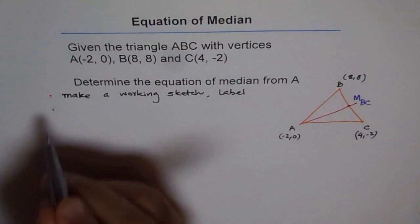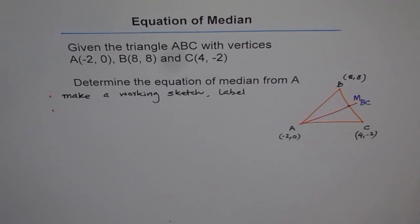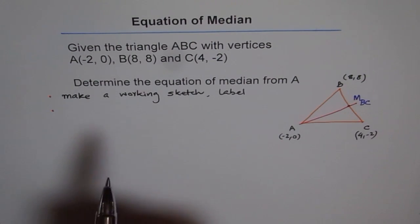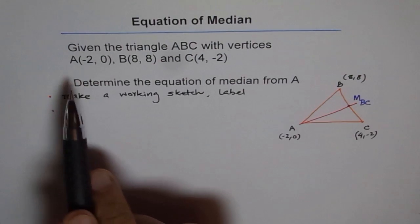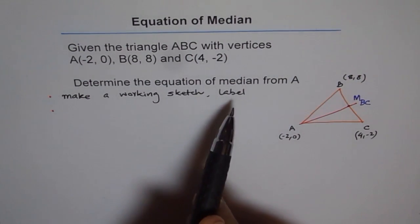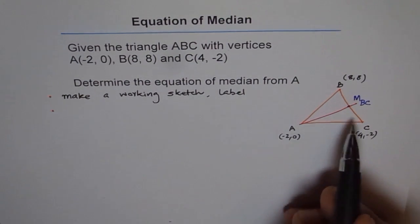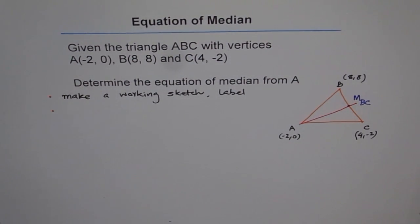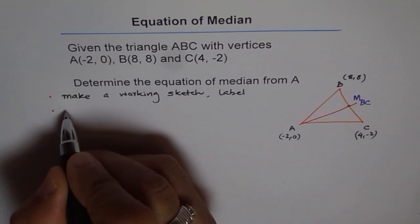And the second step should be understand the problem. So read the problem again. So once you read the problem, given a triangle with these vertices, well, we label them all, determine the equation of median from A. Median is midpoint of the opposite side to the vertex given A. So opposite side is BC.